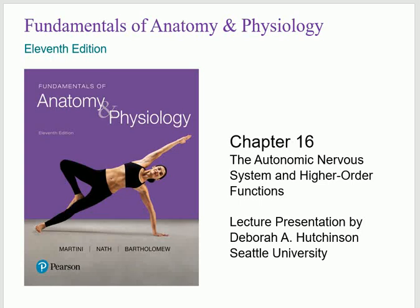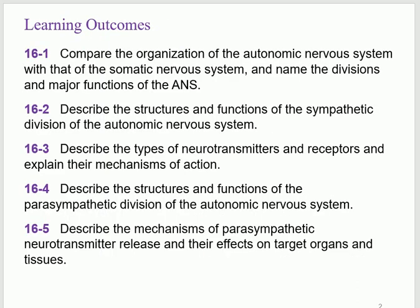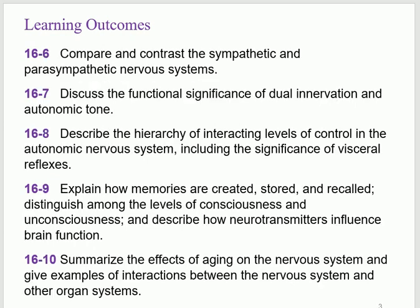Chapter 16 is the autonomic nervous system and higher order functions. Learning outcomes: we will talk about the autonomic nervous system — sympathetic and parasympathetic — starting from sensory and motor, from the receptors to the effector, controlling the physiology of both. Then we'll go through the conscious functions, the higher functions of the body.